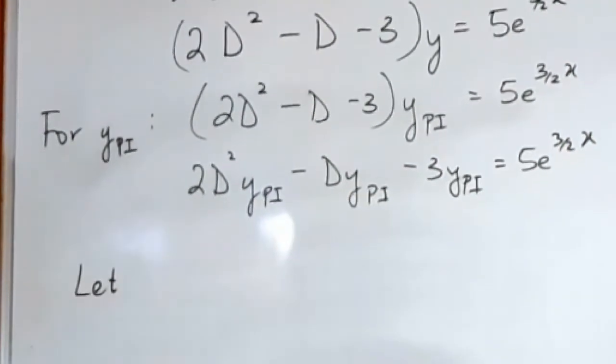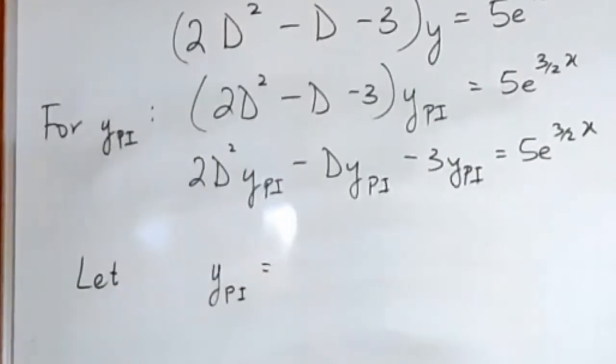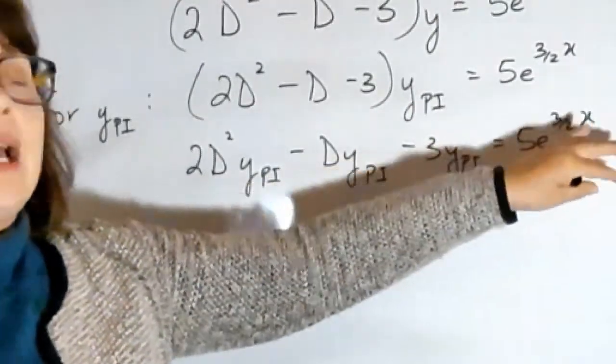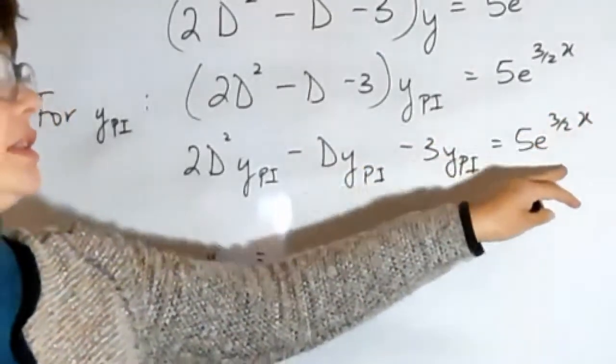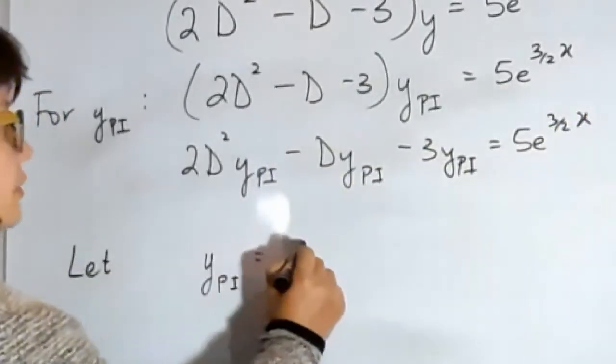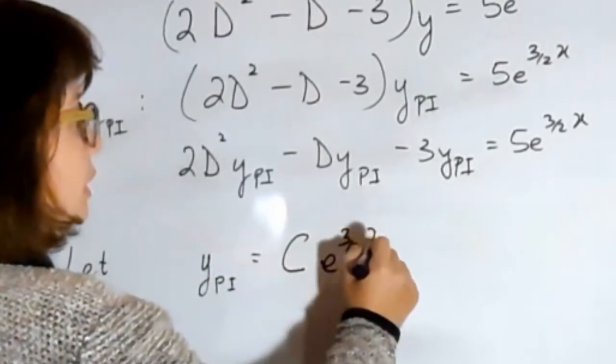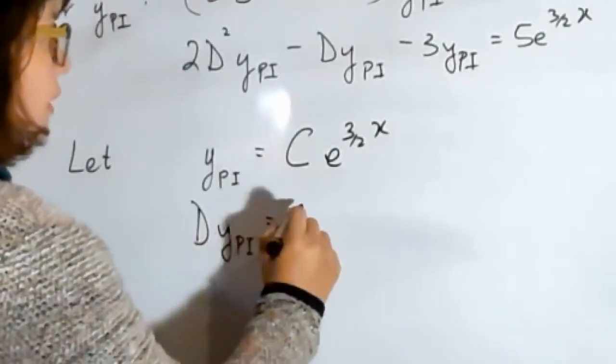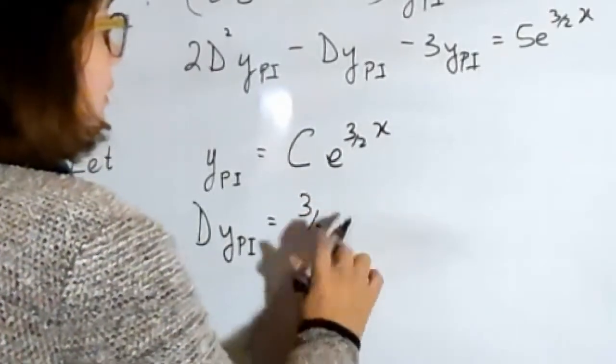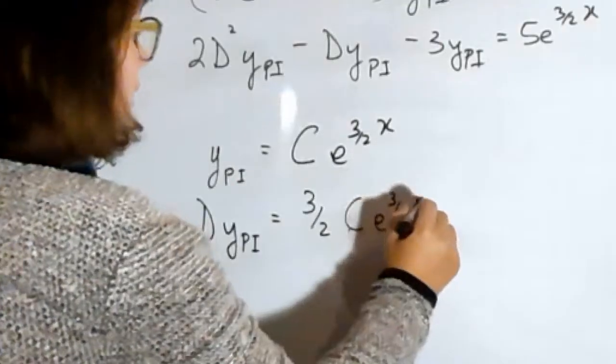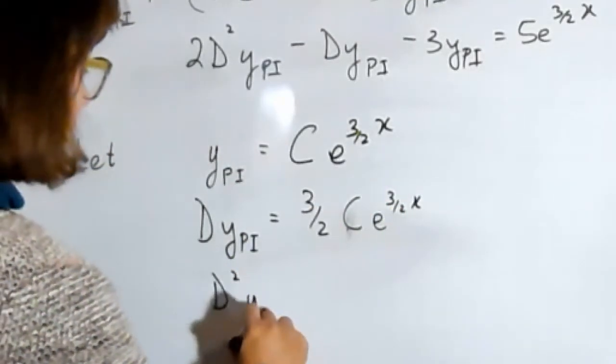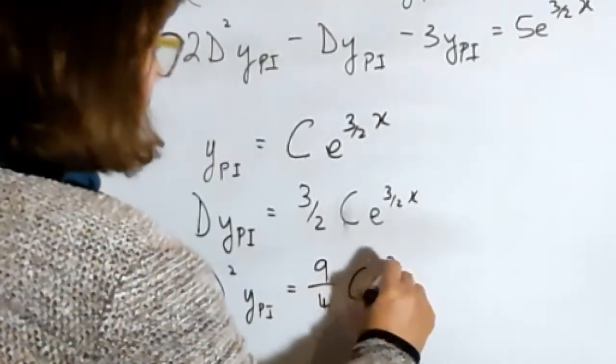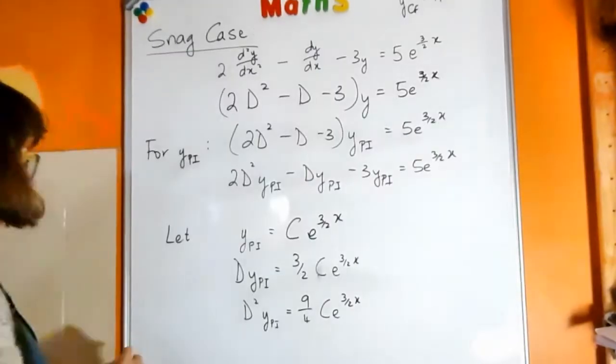So let's choose a trial function for ypi. And because this has to simplify down to 5e to the 3 over 2x, I'm going to choose some function with this as part of it. So c e to the 3 over 2x. I'm going to choose it to be that. So then my first derivative is going to be that.